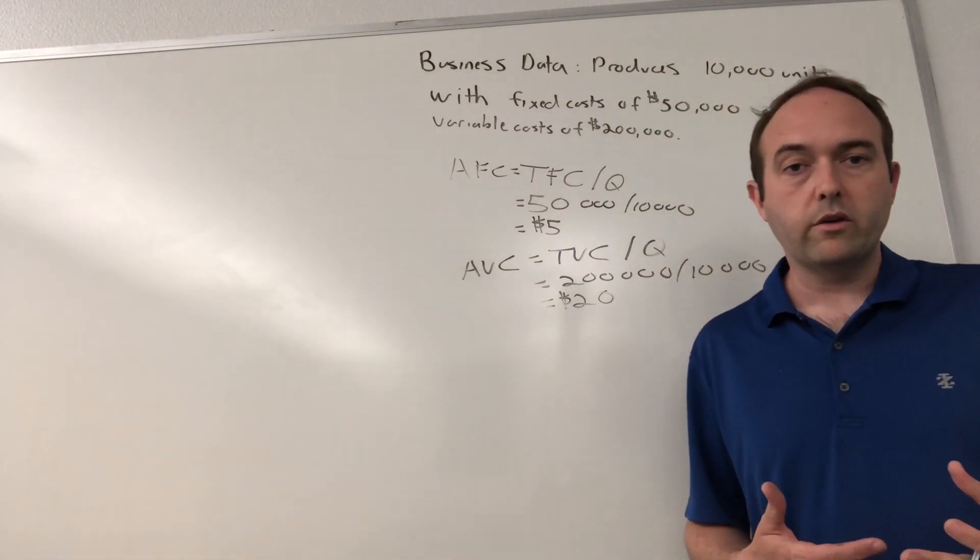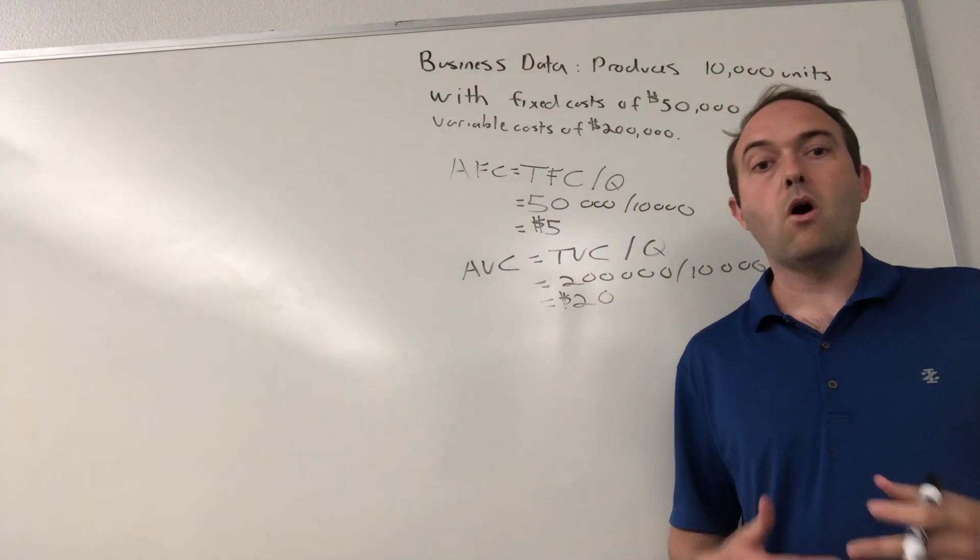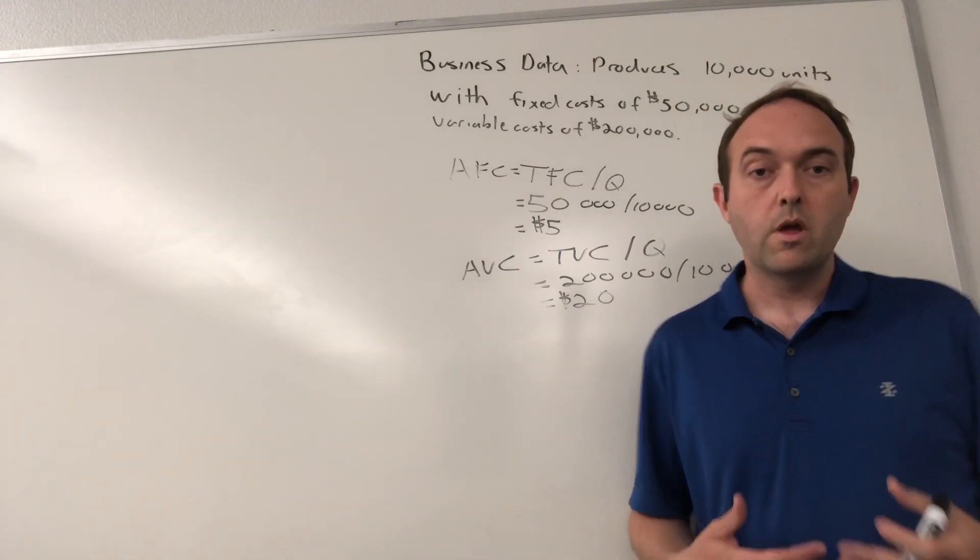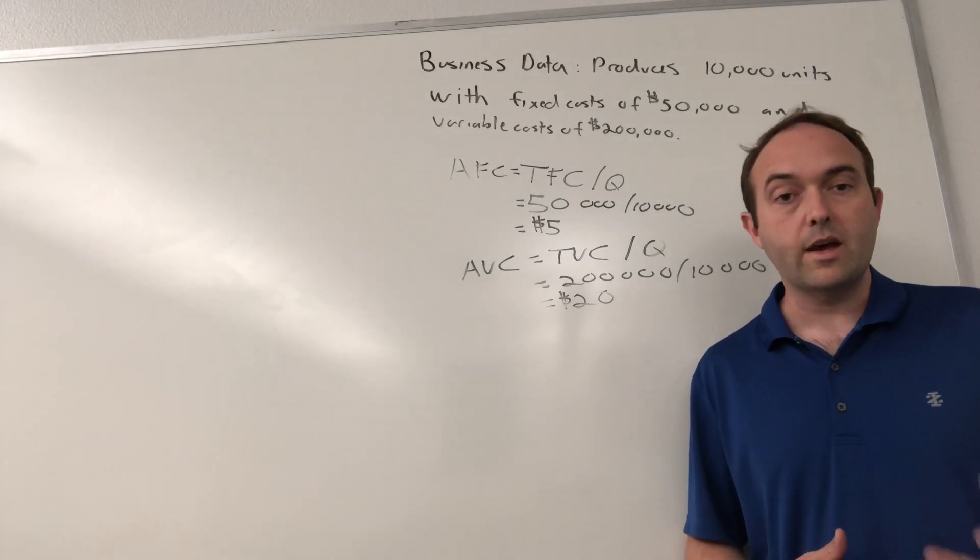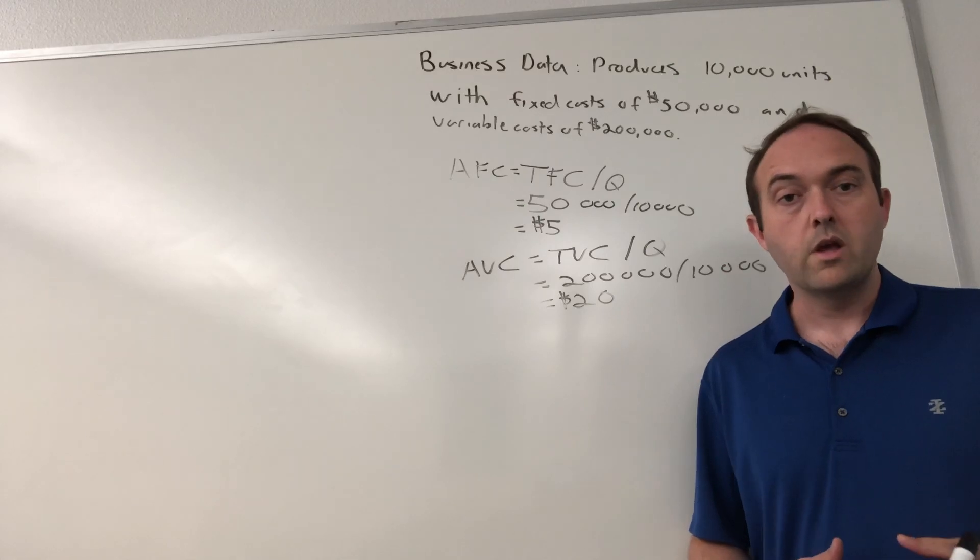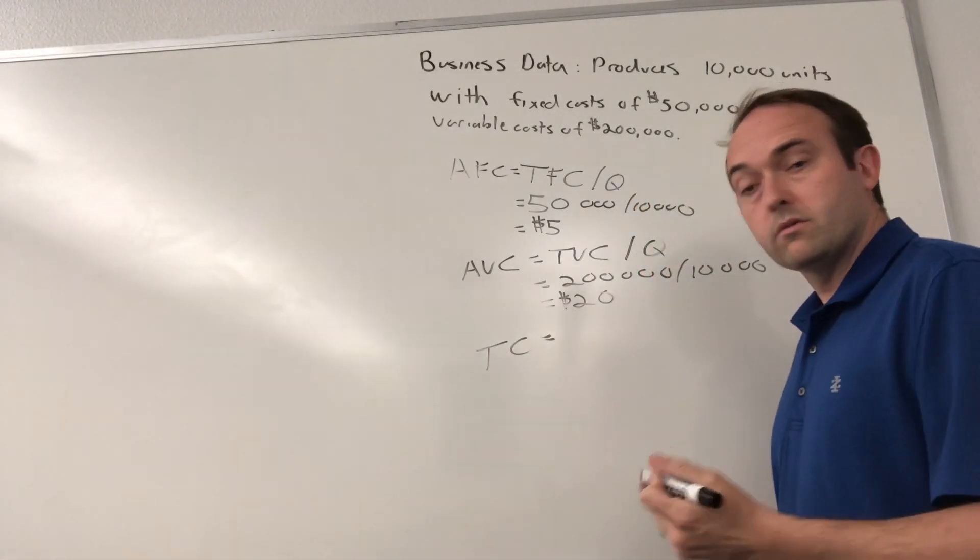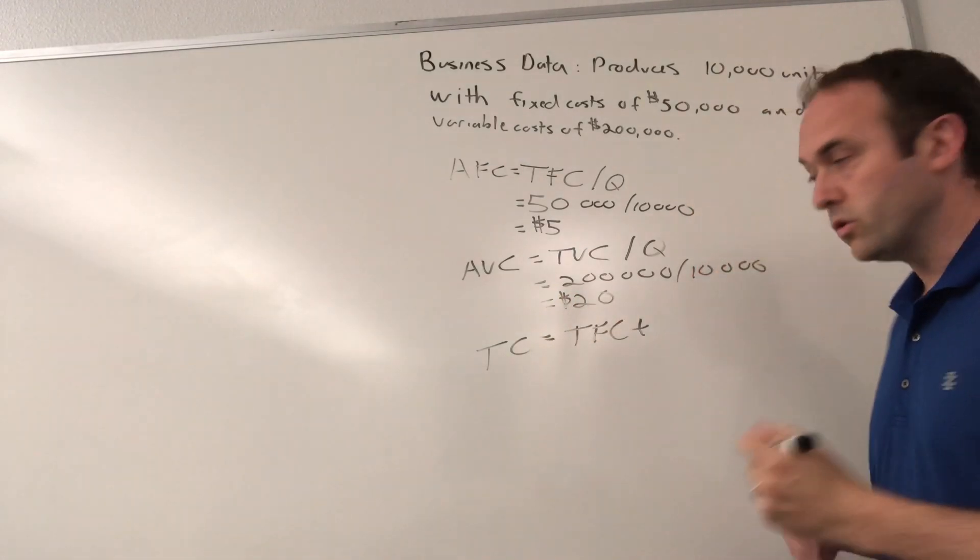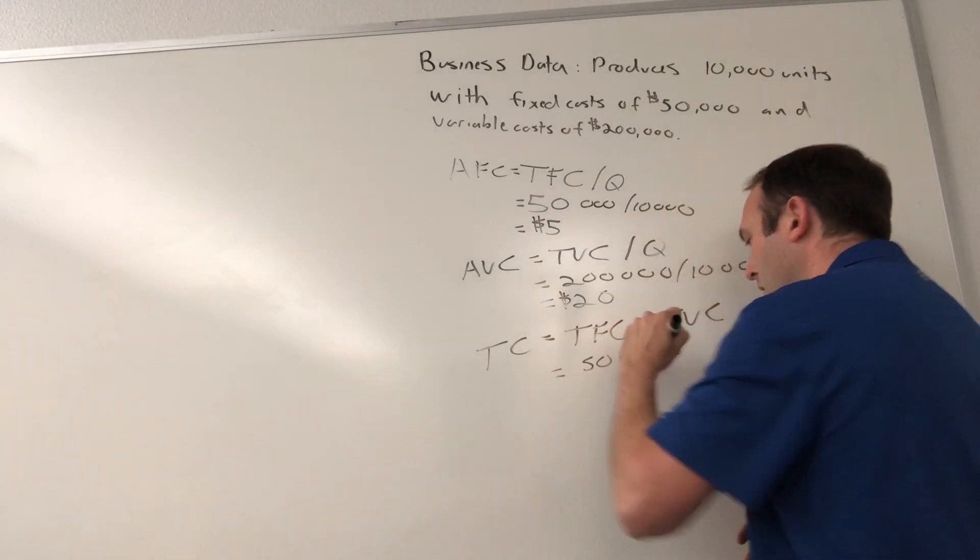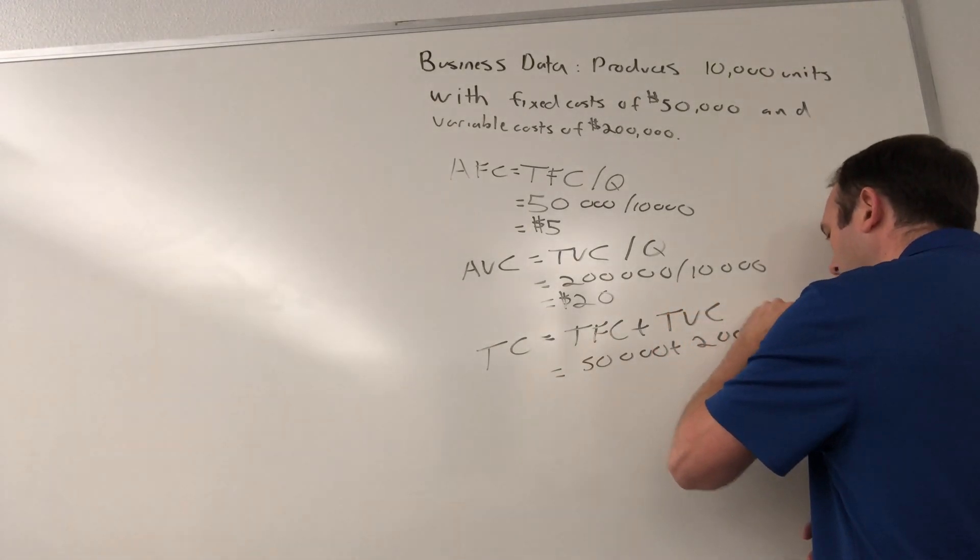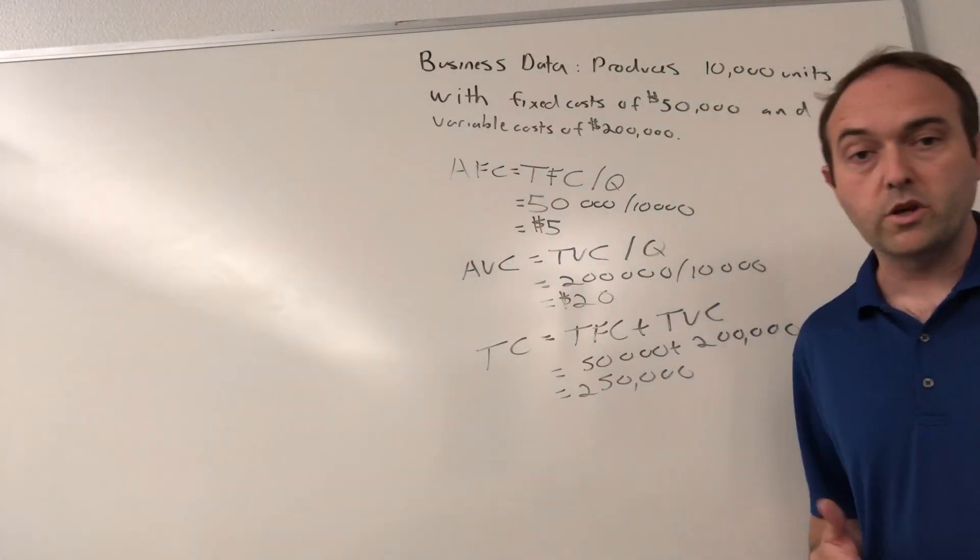Now, the last two cost calculations I want to present in this video are total cost and average total cost. Total cost is just the sum of all the costs that you incurred to produce a specific number of units. In our example, we have $50,000 in fixed costs and $200,000 in variable costs to make 10,000 units. TC equals the total fixed costs, TFC, plus the total variable costs, TVC. In our data, that's $50,000 plus $200,000, which gives us $250,000 as our total cost of operation for this firm.